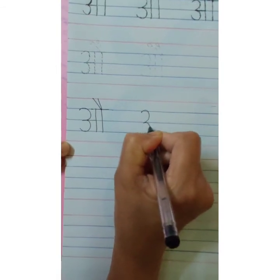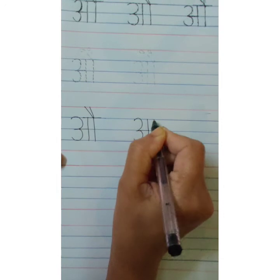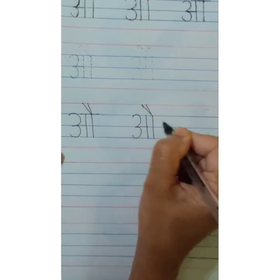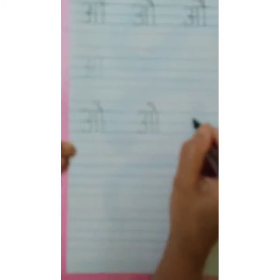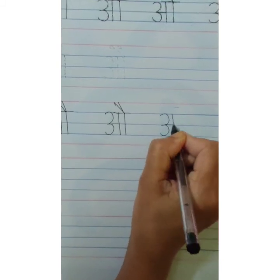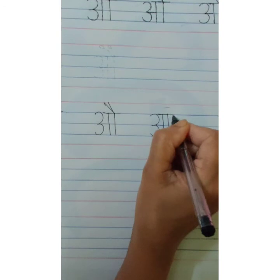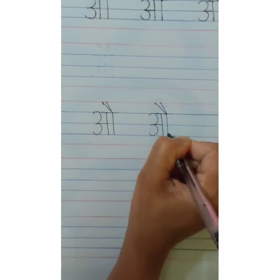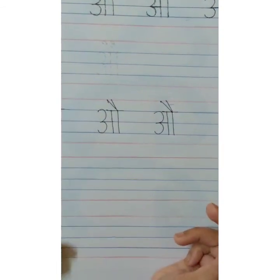One more time. Write number 3, sleeping line, standing line, one more standing line, and matra on the second standing line. Overhead small sleeping line — AU. Number 3, sleeping line, standing line, one more standing line, overhead small sleeping line, and two matras on the second standing line. AU. This way you are going to complete the page.